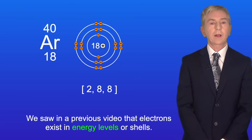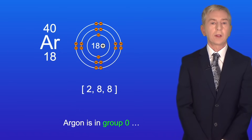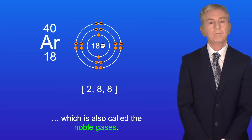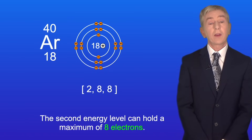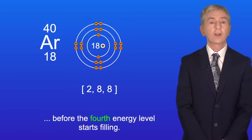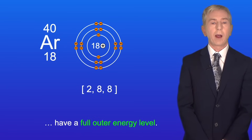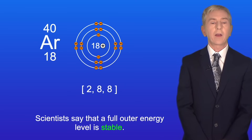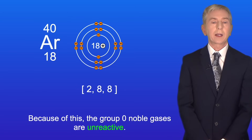We saw in a previous video that electrons exist in energy levels or shells. Here are the electrons in an atom of argon — argon is in group zero, also called the noble gases. The first energy level can hold a maximum of two electrons, the second a maximum of eight, and the third energy level can also hold eight electrons before the fourth starts filling. All of the noble gases in group zero have a full outer energy level, which scientists say is stable, making the noble gases unreactive.